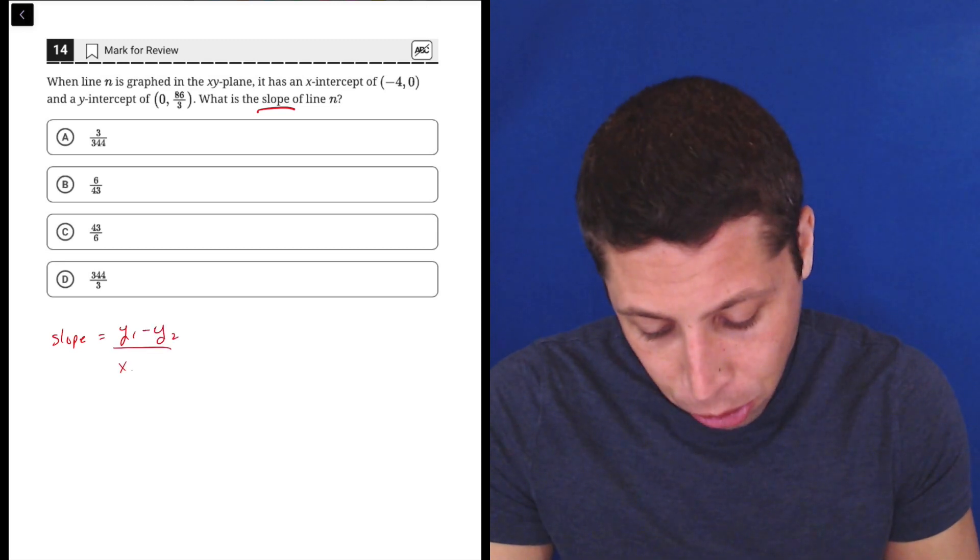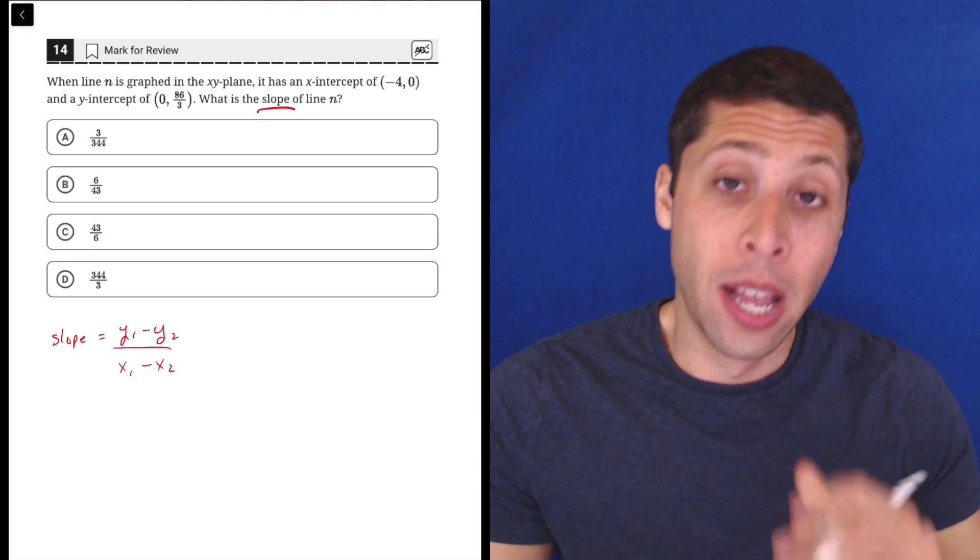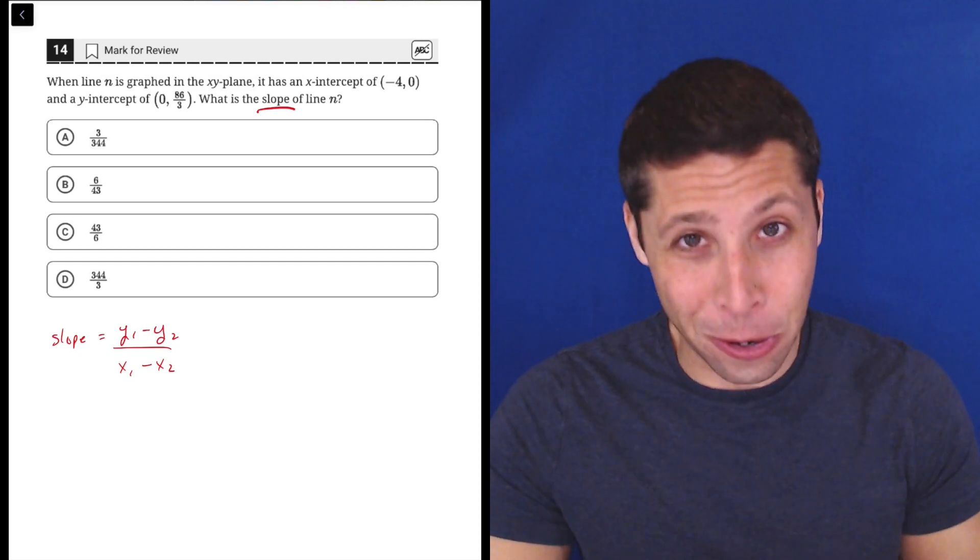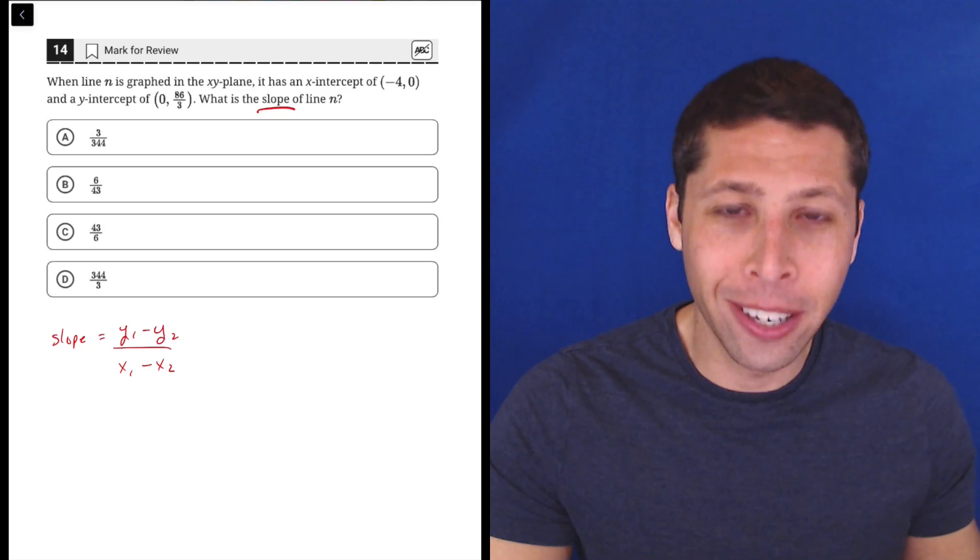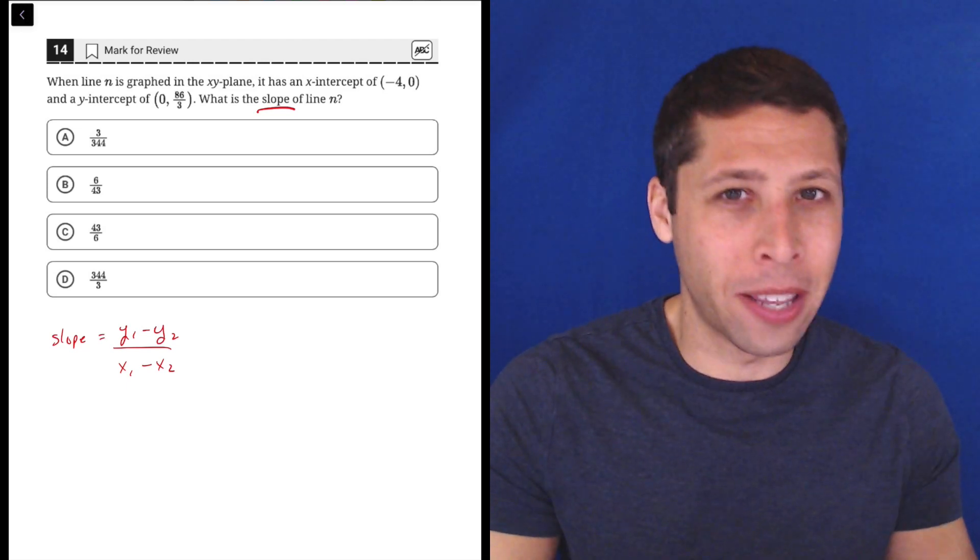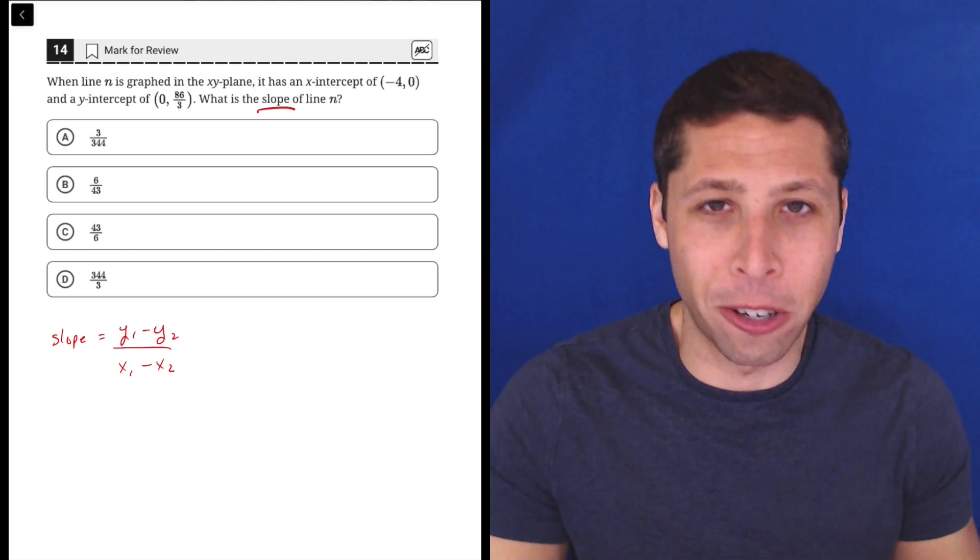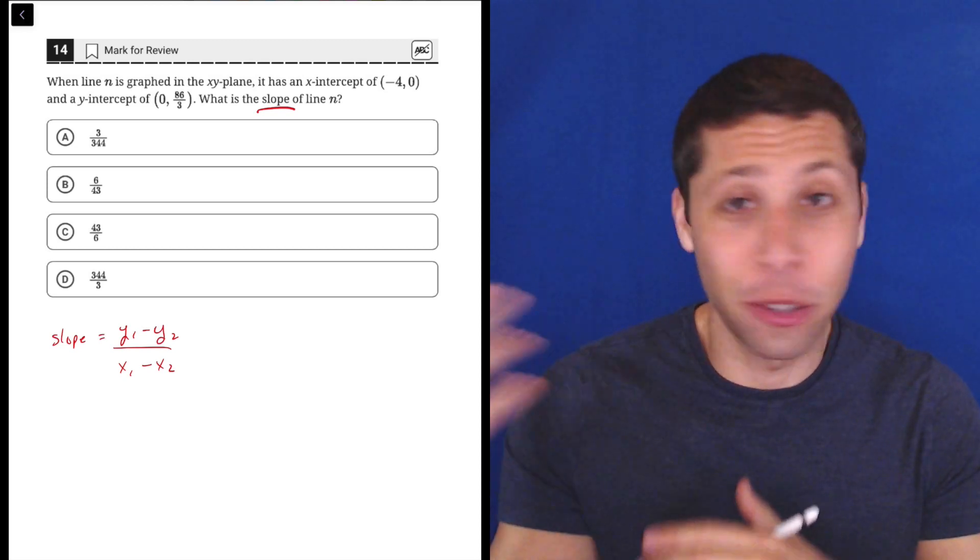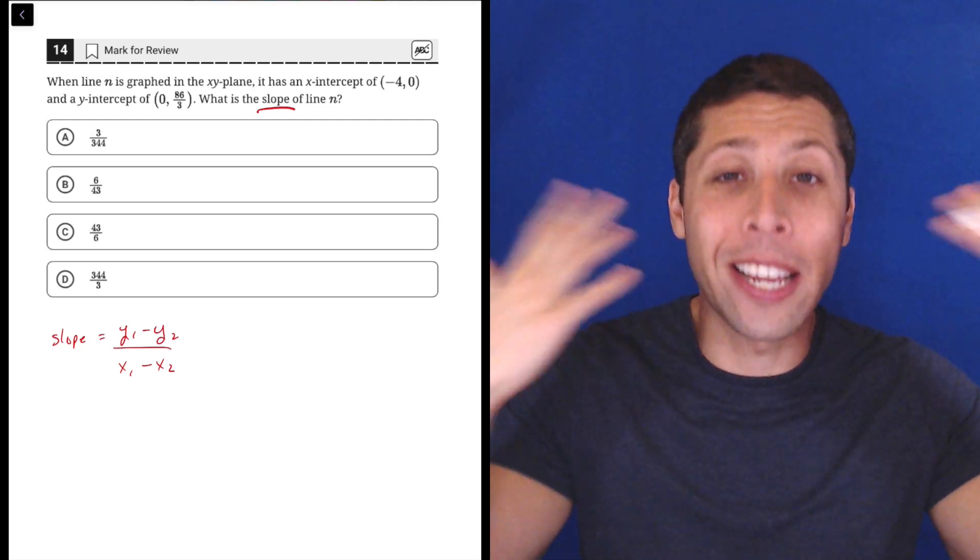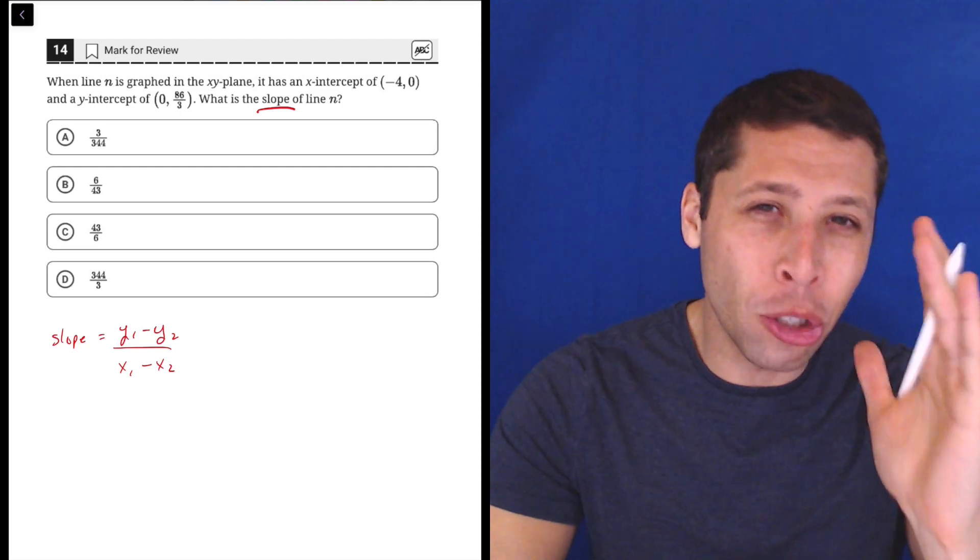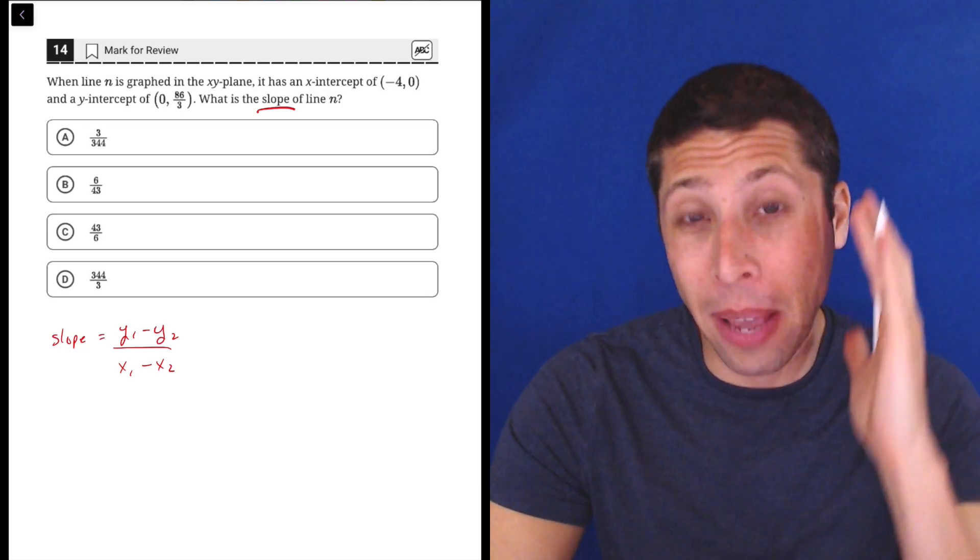is y1 minus y2 over x1 minus x2. You may have learned it backwards where it's y2 minus y1 over x2 minus x1. That does not matter. I think it's kind of stupid that we have a formula where two comes before one. So that's why I just do one and two because they're in the order that they appear in your brain. So whatever way you like, the key is whatever point we choose to be first has to be first on the top and first on the bottom.